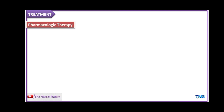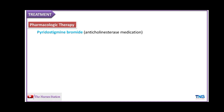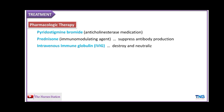The first treatment modality is pharmacologic therapy. The first drug of choice is pyridostigmine bromide, an anticholinesterase medication which prevents the breakdown of acetylcholine and increases its concentration at the neuromuscular junction, improving muscle contraction. The second is prednisone, an immunomodulating agent that suppresses antibody production. The next is intravenous immune globulin, which destroys and neutralizes the antibodies.